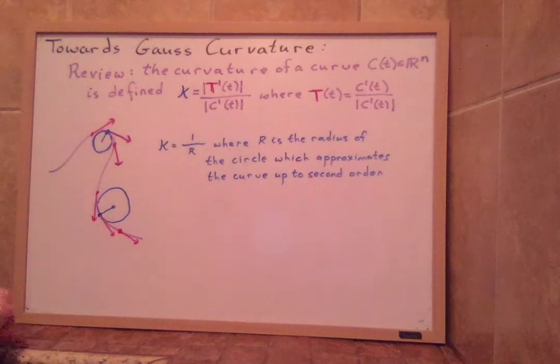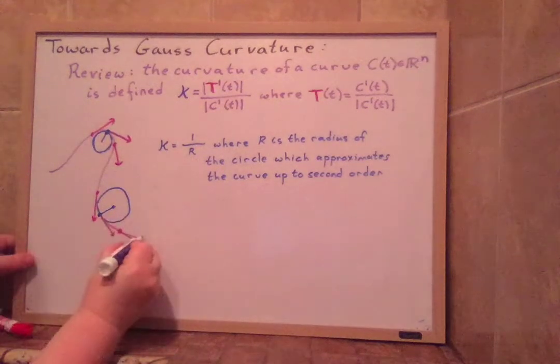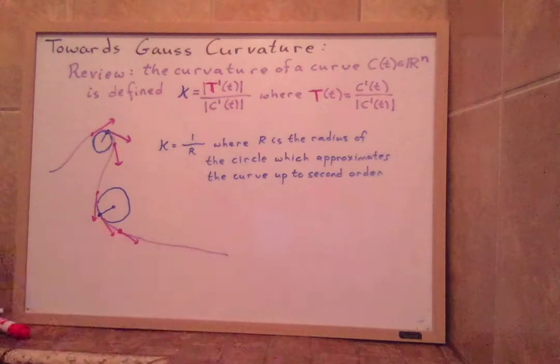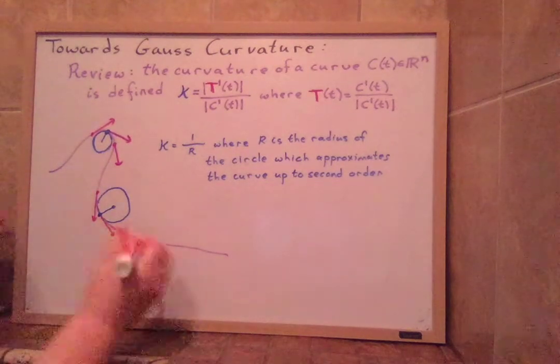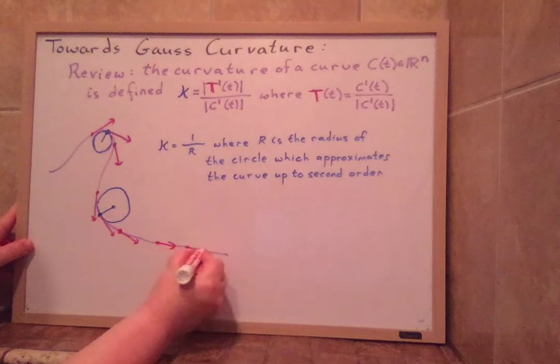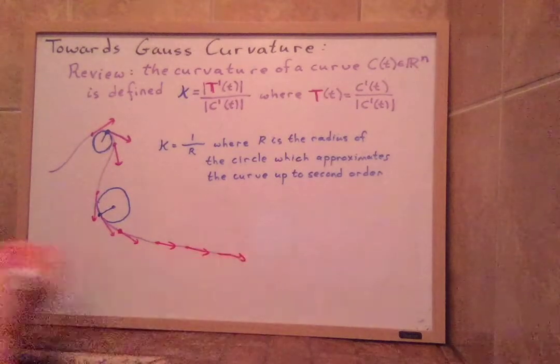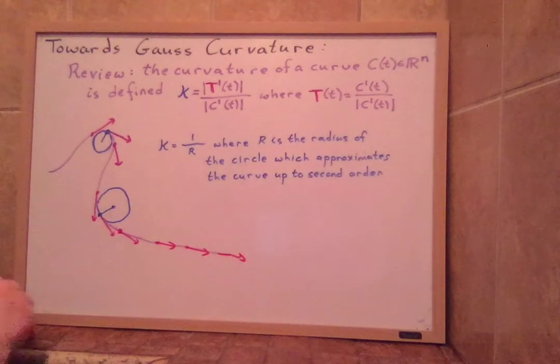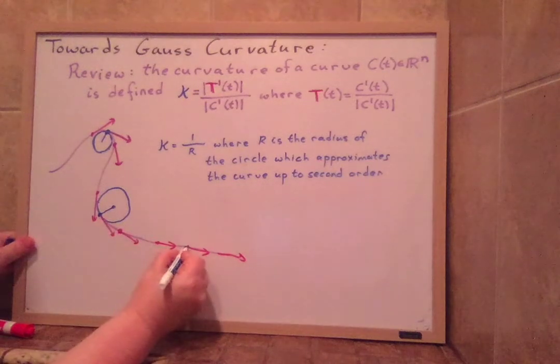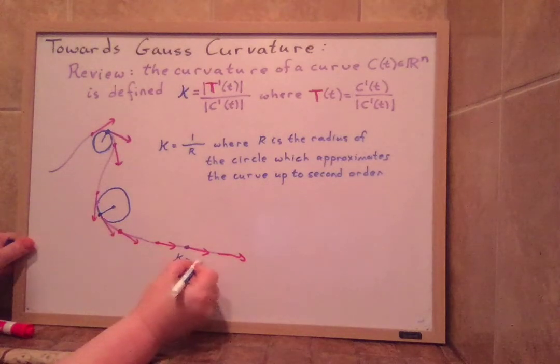And if the curve actually becomes straight somewhere, and it's just moving along straight, then the tangent vector is just going exactly straight the whole time. If the tangent vector is the same all the time, then over here at a point like that, the curvature is actually equal to zero.